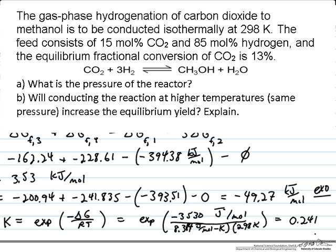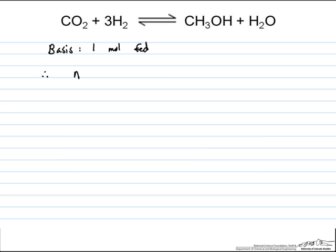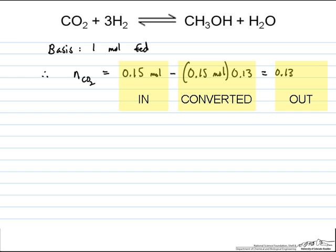Now we want to be able to relate this equilibrium constant to an extent of reaction. To do that, we'll establish a basis of 1 mole initially in our container. We know that the number of moles of CO2 is initially equal to 0.15 moles, and then we will be converting 13% of that 0.15 moles according to the problem statement. So what we have left is 0.131 moles.